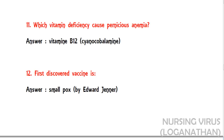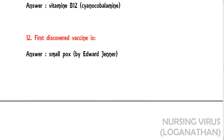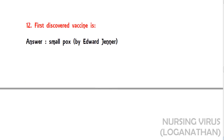The twelfth question: which was the first discovered vaccine? The answer is smallpox, discovered by Edward Jenner — the first vaccine discovered worldwide.